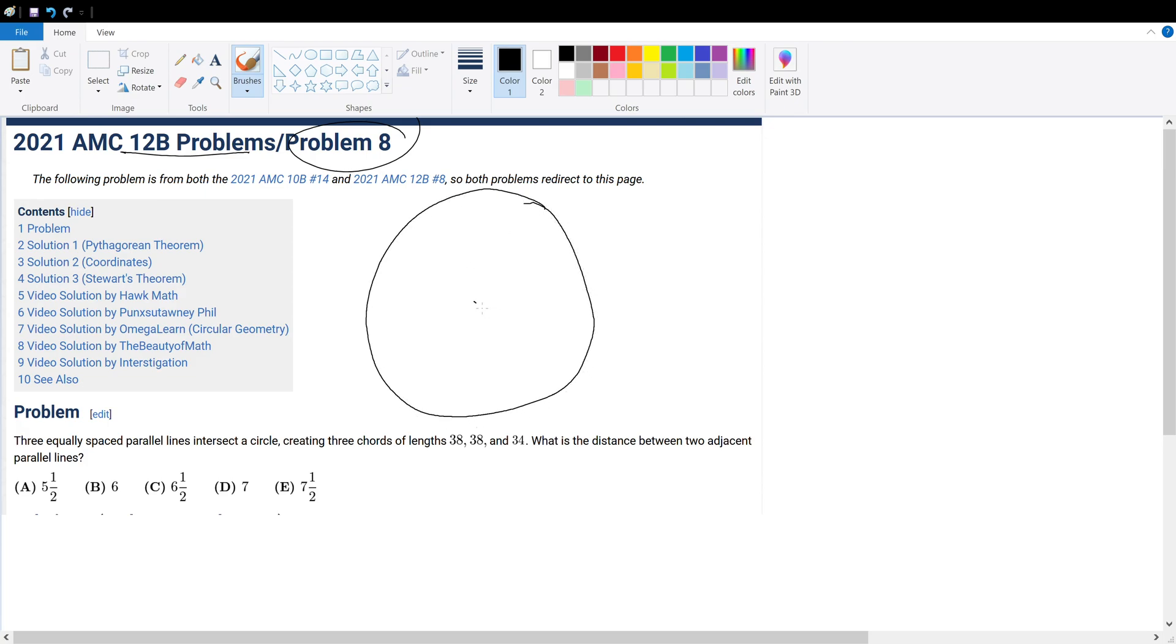Given what the question is asking for, we have a circle, and we have two parallel lines that are the same length. Let me redraw that line. So this is 38, that's 38, and we have another parallel line that is of length 34, and we're given that they're all the same distance apart.